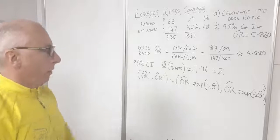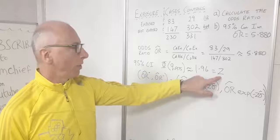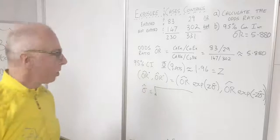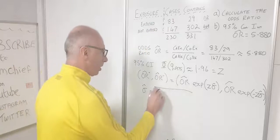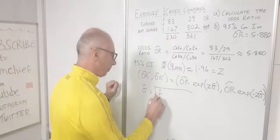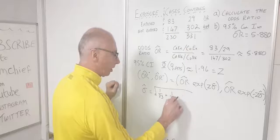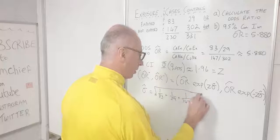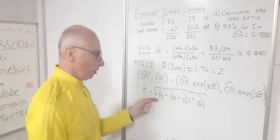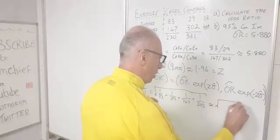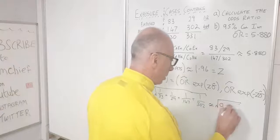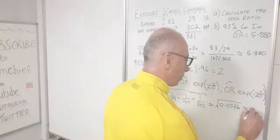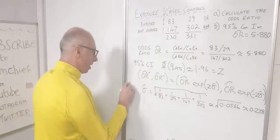First we need to calculate the standard error. It's the square root of the sum of the reciprocals of all values in the contingency table: 1/83 + 1/29 + 1/147 + 1/302. That gives us the square root of approximately 0.0566, which equals approximately 0.238 — that's our standard error.